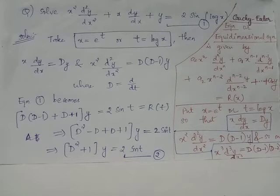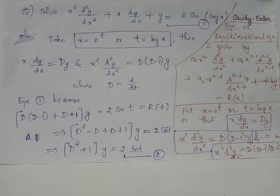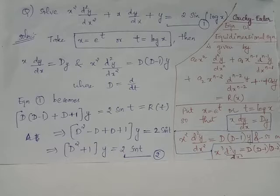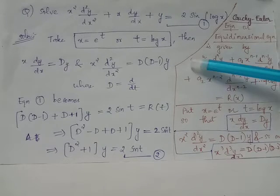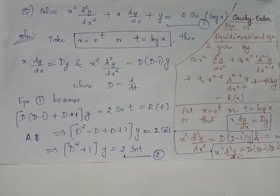This equation is of the form x^n · d^n y/dx^n plus x^(n-1) · d^(n-1)y/dx^(n-1) plus etc. plus y, where the constants a0, a1, a2, and so on through an are all equal to 1.